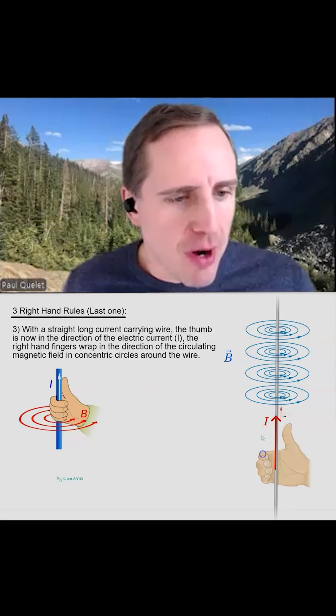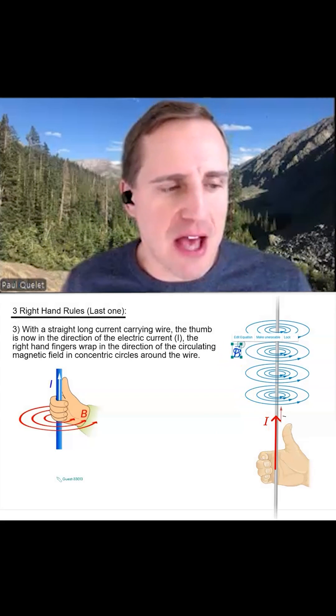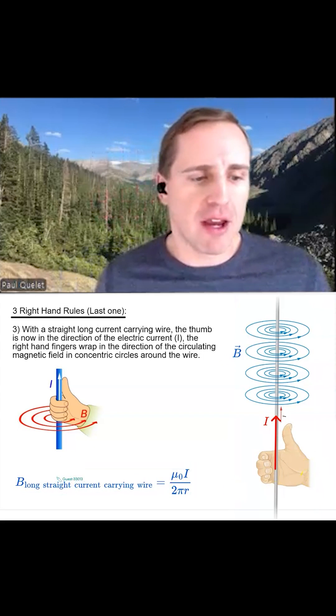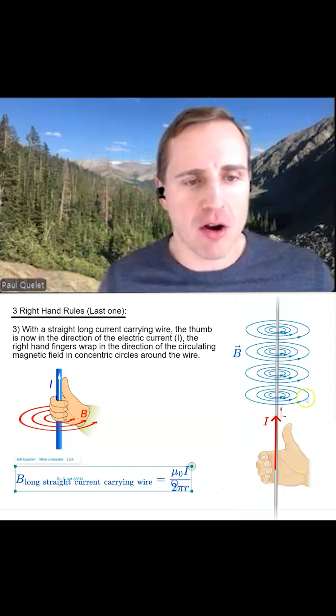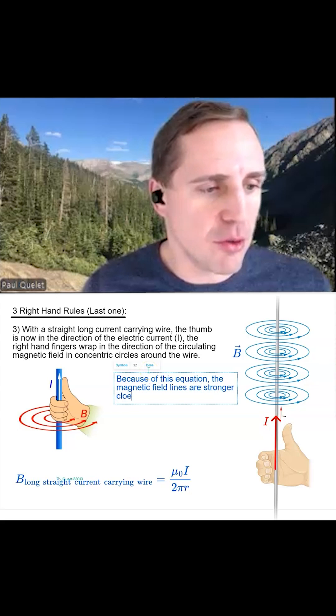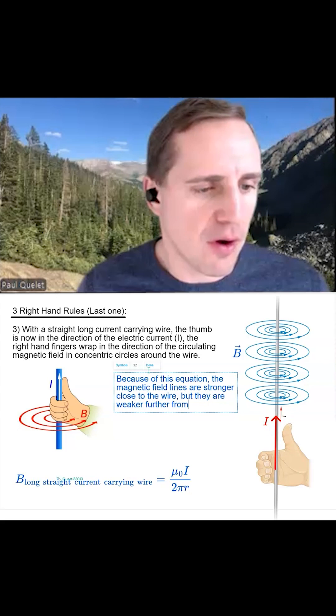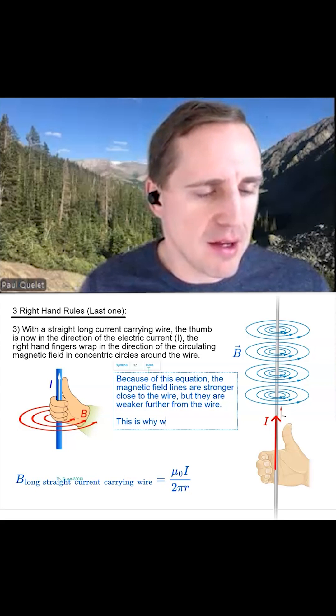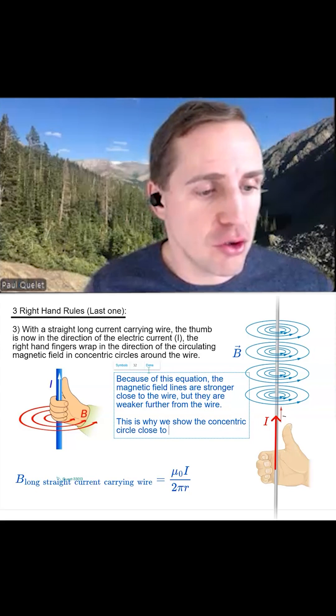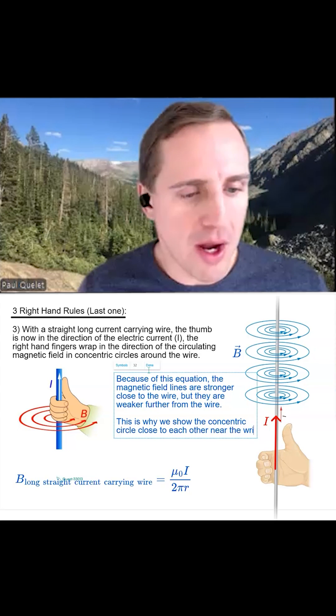The third right-hand rule has a little bit of an equation to go with it. The magnetic field of a long straight current carrying wire is mu not I over two pi r. Because of the equation, the magnetic field lines are stronger close to the wire but weaker further from the wire. This is why we show the concentric circles close to each other near the wire, but spreading out with radius as we get further from the wire.